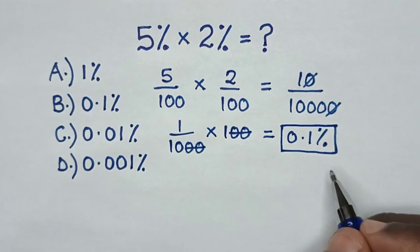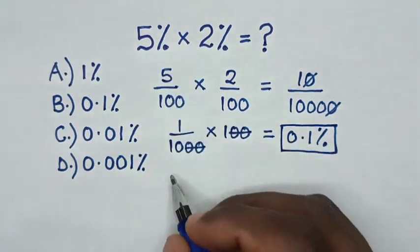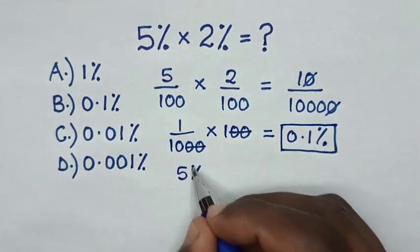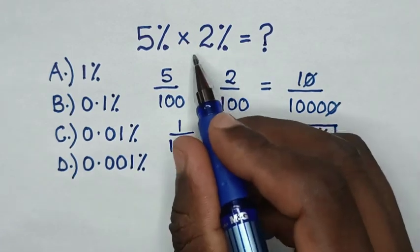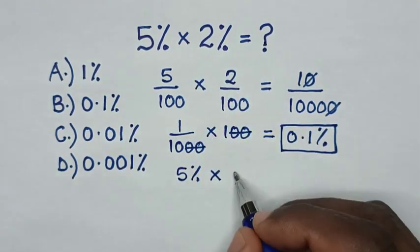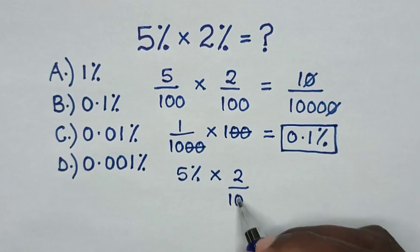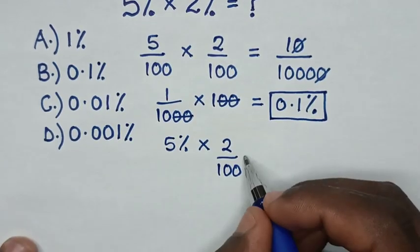Or in another method, from this 5%, then times 2% into fraction is 2 over 100. Then it will be equal to,